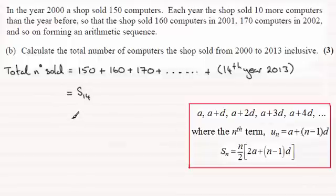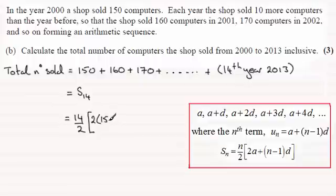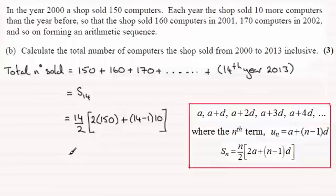This is going to be equal to S14. Putting in our values we get 14 divided by 2, then twice the first term — that's 2 times 150 — plus n minus 1, so that's 14 minus 1, times the common difference which is 10. If you work this out you should find you get 3010 — so 3010 computers were sold in that time period.